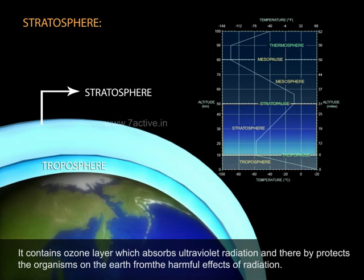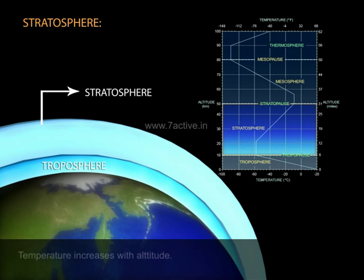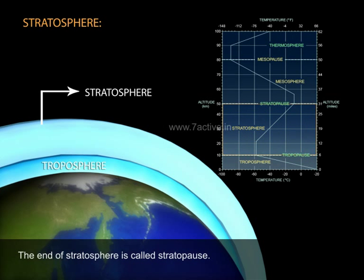It contains ozone layer which absorbs ultraviolet radiation, and thereby protects the organisms on the Earth from harmful effects of radiation. Temperature increases with altitude. The end of stratosphere is called stratopause.